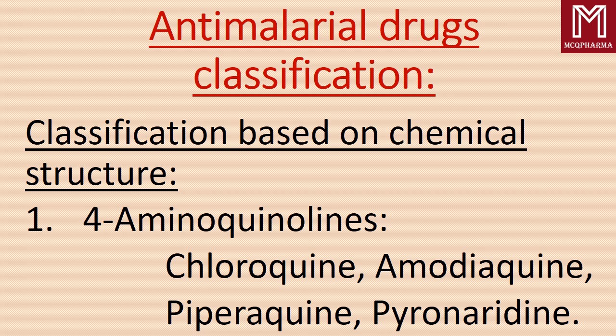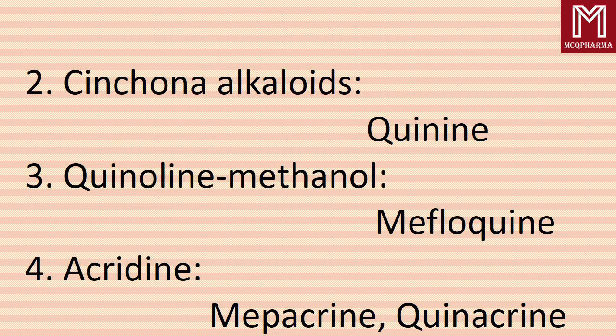Classification based on chemical structure. First, 4-aminoquinolines — examples: chloroquine, amodiaquine, piperaquine, pyronaridine. Next, cinchona alkaloids — example: quinine.